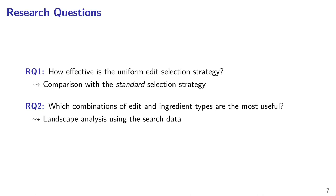We ask two research questions. First, we want to compare the two ways of generating GI edits — specifically the difference between uniformly selecting the type of edits versus uniformly sampling within all unique edits. Then, we want to leverage our search to perform landscape analysis on our GI scenarios, and in particular we are interested in seeing emerging patterns between the type of edits and the ingredient types.